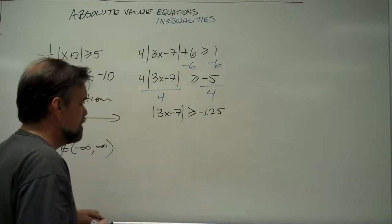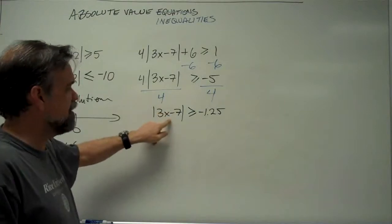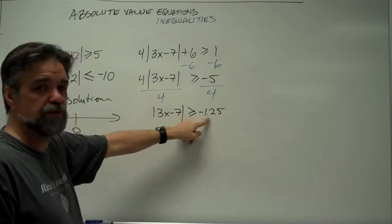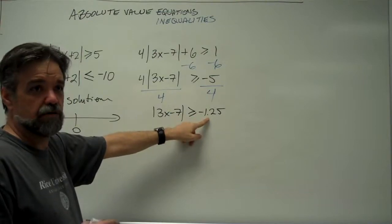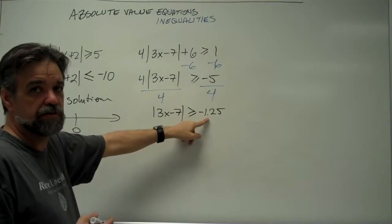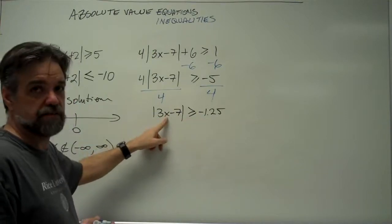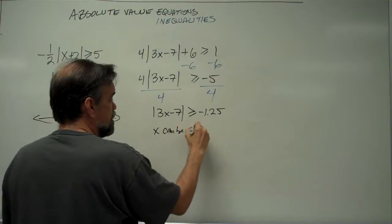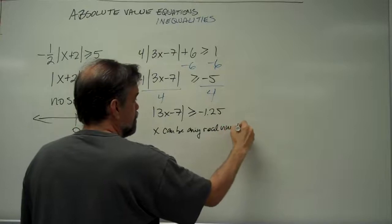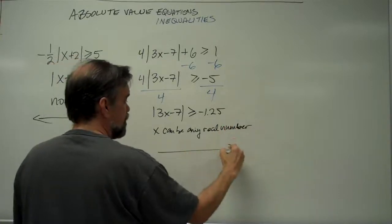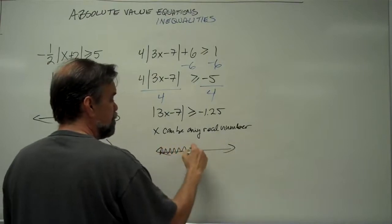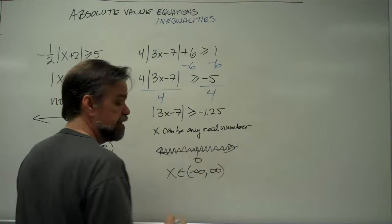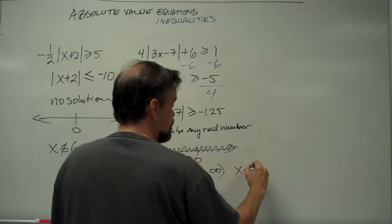Now, stop and say, hold it. The smallest this can possibly be is 0, because it's an absolute value. This says greater than or equal to negative 1.25. Yeah. 0, or anything bigger, is automatically greater than or equal to negative 1.25. That means it doesn't matter what x is. This is always going to be true. So, that means x can be any real number. And on the number line, we shade in the whole dang thing, and we say x is somewhere between negative infinity and positive infinity, or we just say x is somewhere in the set of real numbers.